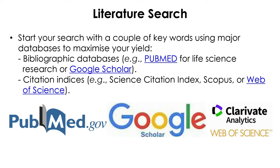You can start your search with major bibliographic databases, which are specialized digital collections of references to published literature such as journal articles or books. For bio students, PubMed will be the most relevant database — it is primarily dedicated to life sciences or biomedical topics. Google is always your best friend for any search, and they also have a more specialized search engine called Google Scholar for literature search.